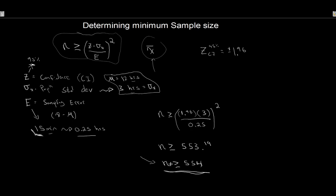More is always better when it comes to sampling. The bigger the sample, the more accurate our results — the distribution of sample means collapses into a spike around the population mean. So a bigger sample is always a better sample.